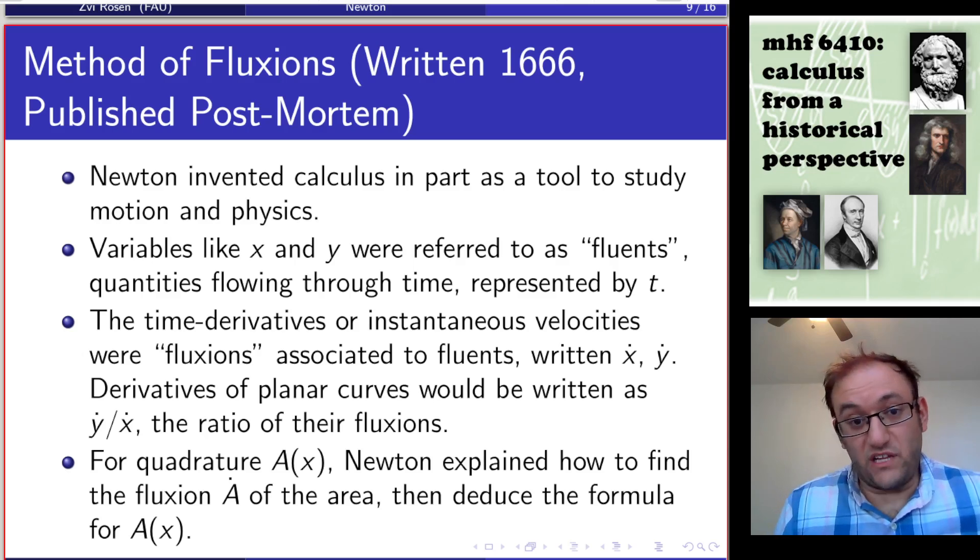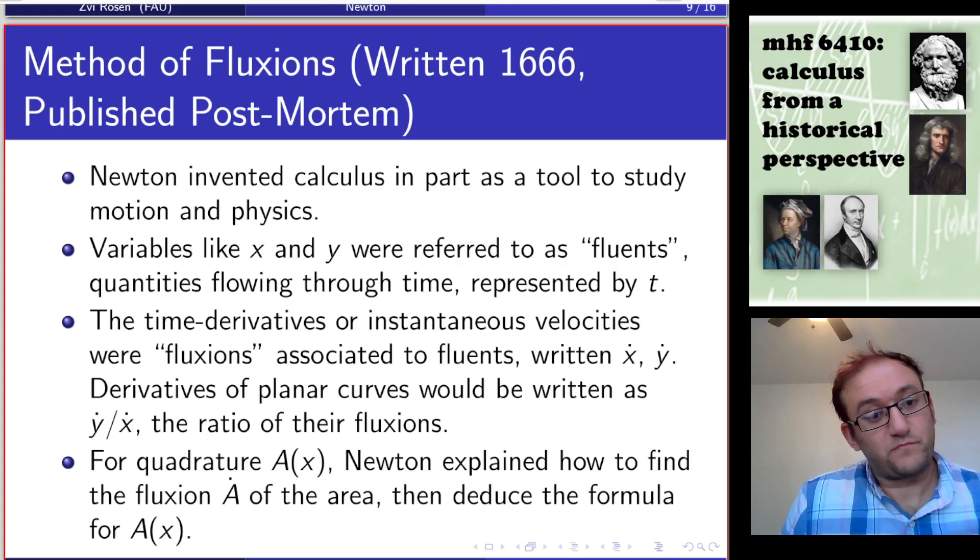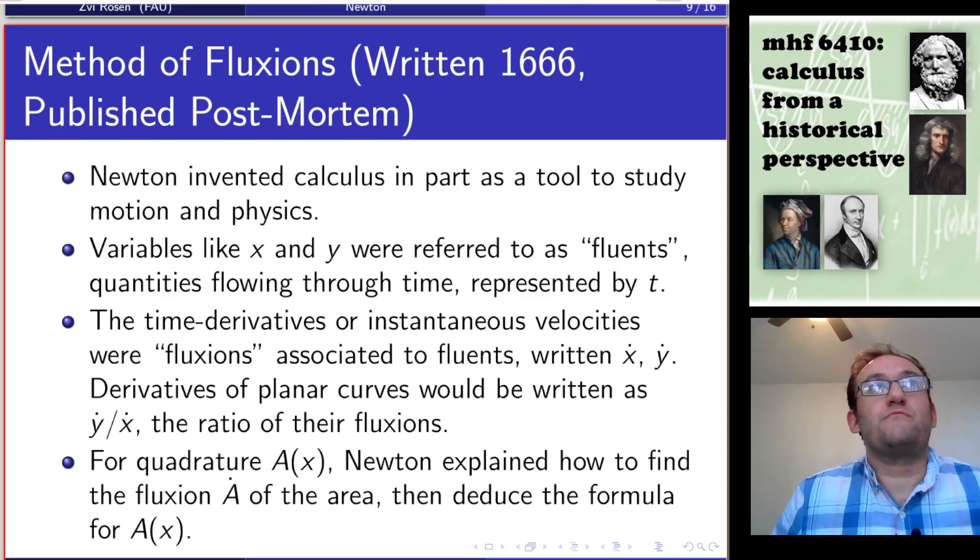The time derivatives, or instantaneous velocities, were called fluxions, and they were associated to specific fluents. For instance, to x we have x dot as a fluxion, to y we have y dot. Then if we want to take a derivative of a planar curve, the derivative that Newton would compute would be written as y dot over x dot, the ratio of their fluxions. In terms of quadrature, or integration, if you have a function a of x describing the area under a curve between 0 and x, Newton explained how to find the fluxion a dot associated to the area, then deduce the formula for a of x using anti-differentiation. This was his way of really leveraging the fundamental theorem of calculus as a computational aid.